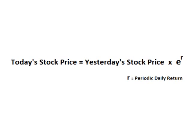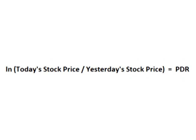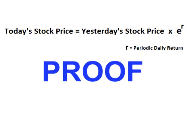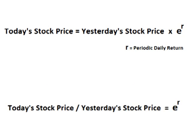Today's stock price equals yesterday's price multiplied by the exponential function E raised to some power. The power is the rate of change that the stock went up that day. What we want to do is find that R value for each day. To do this, we take the natural log of the daily closing price divided by the previous day's closing price. Today's stock price equals yesterday's stock price times the exponential function raised to R. If we divide both sides by yesterday's closing price, we get today's closing price divided by yesterday's closing price equals E raised to R.